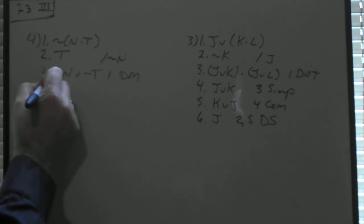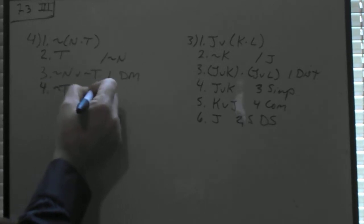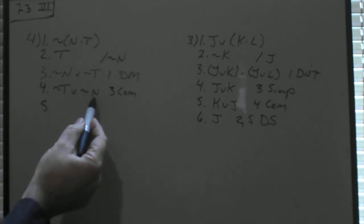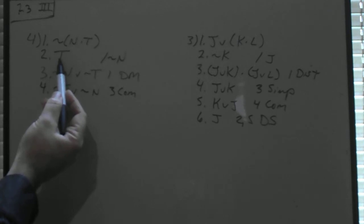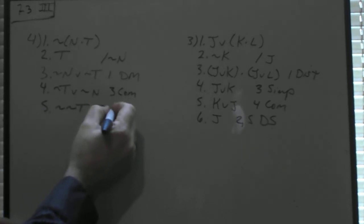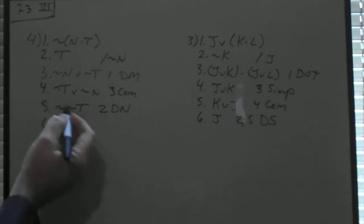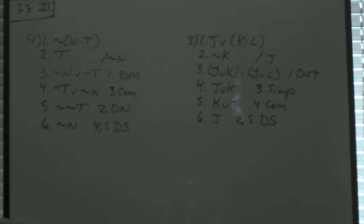Now, again, if you want to use commutativity at this point, you can. If you don't, I don't hold it against you. We want to get not N. Well, with the wedge there, we could make this a disjunctive syllogism if we had not not N. Well, on line 2, you've got T, so if we use double negation, that would become not not T. And now 4 and 5 would make a disjunctive syllogism. It's not T or not N, it's not not T, so it has to be not N, 4 and 5 disjunctive syllogism. And number 4 is proven.